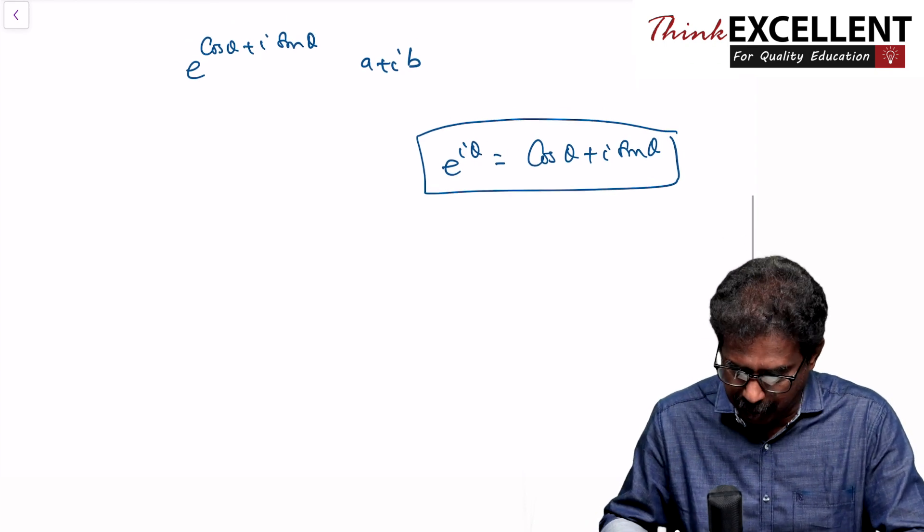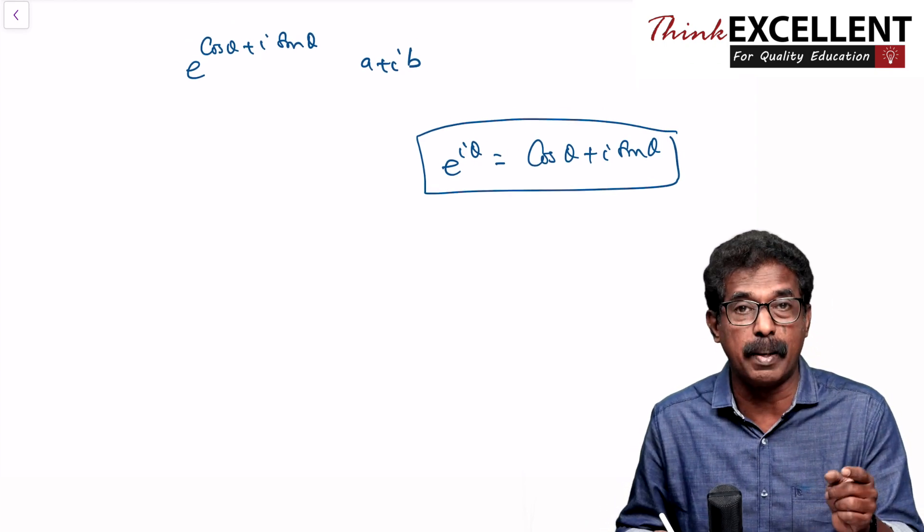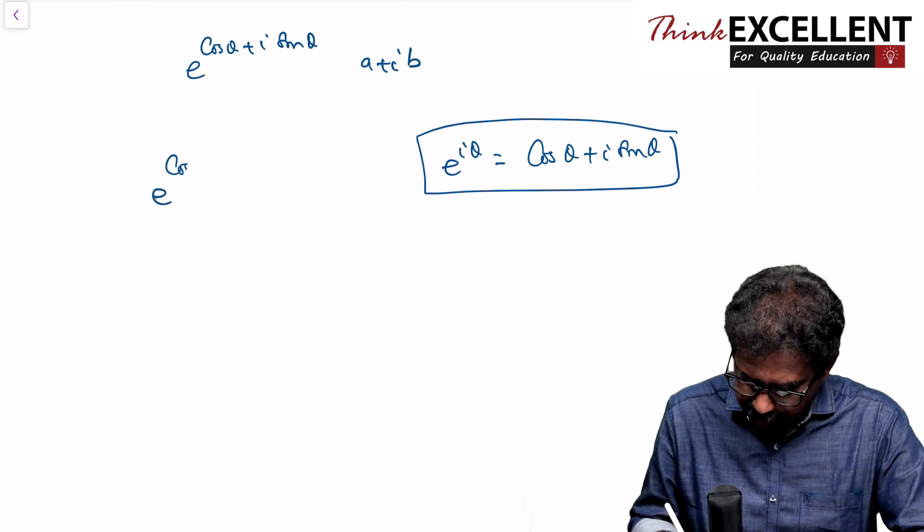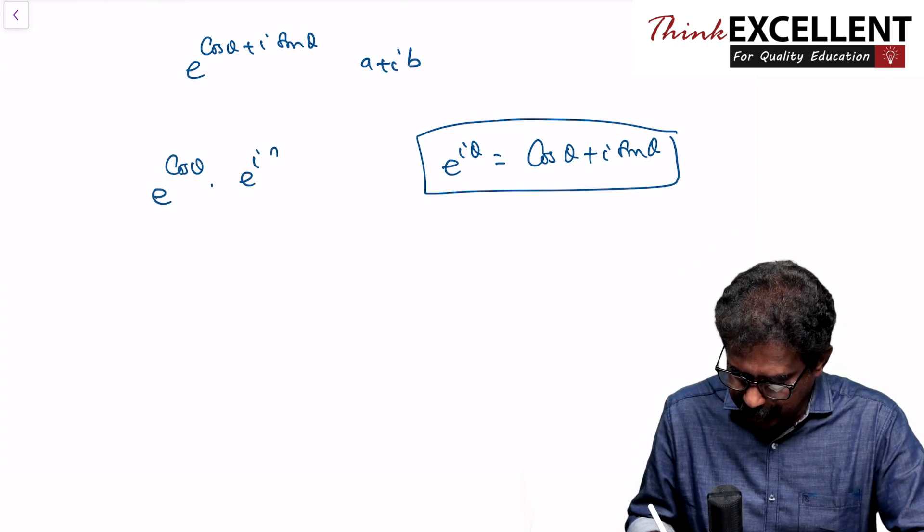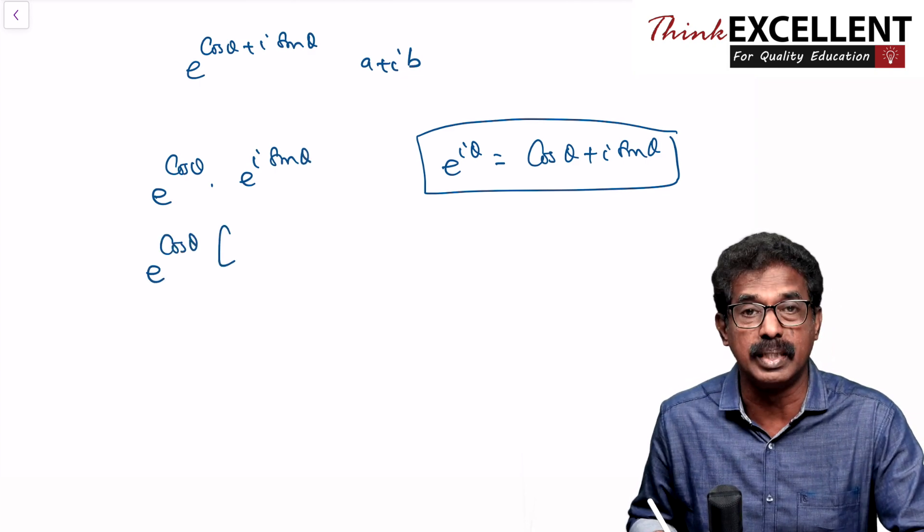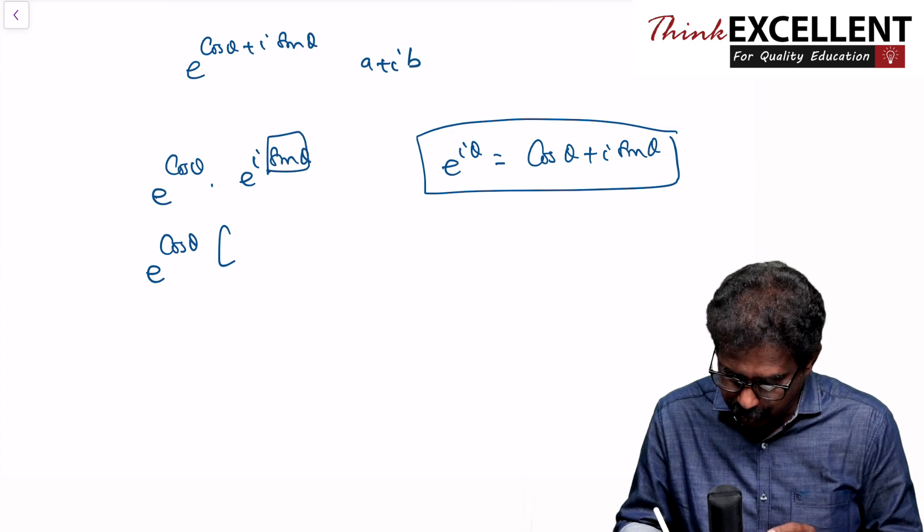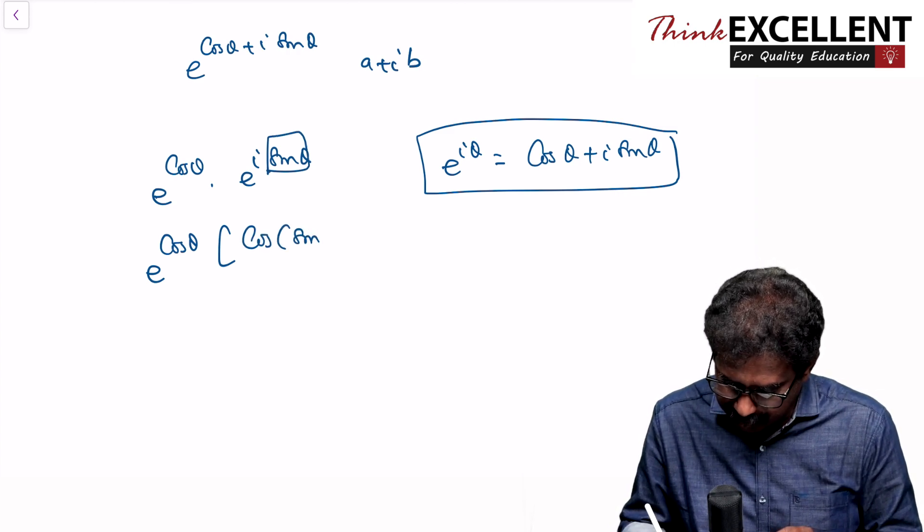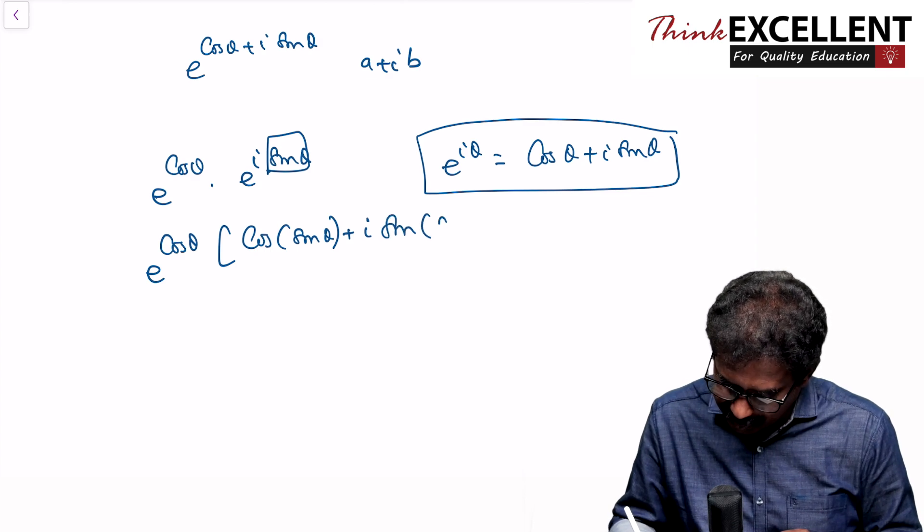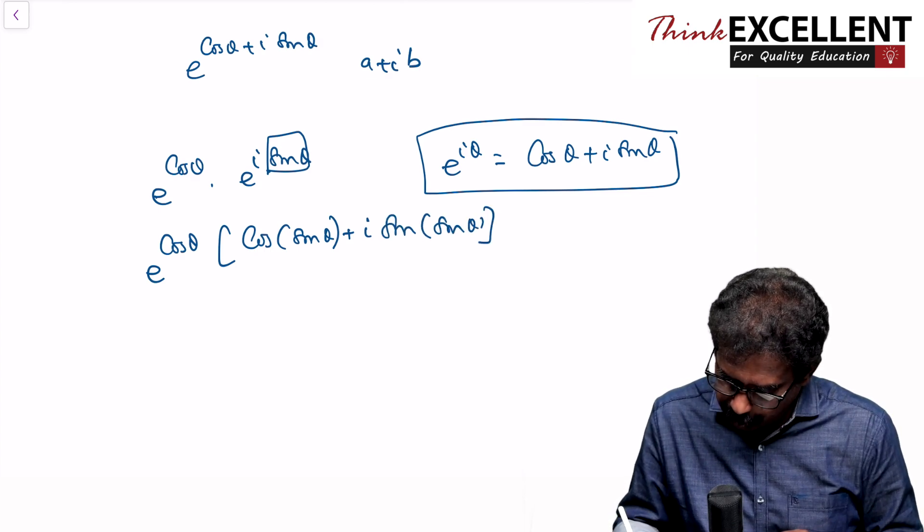So e raised to cos theta into e raised to i sin theta, that is e raised to cos theta into e raised to i sin theta. It's e raised to i theta, so it is cos theta cos sin theta plus i sin sin theta.